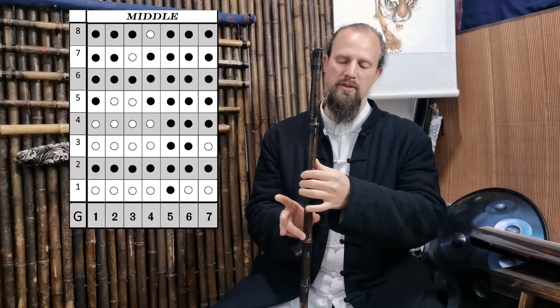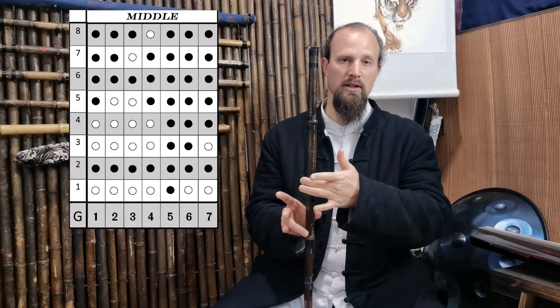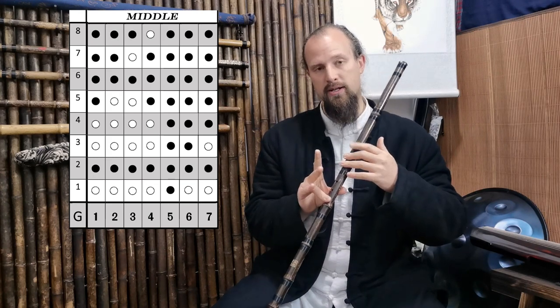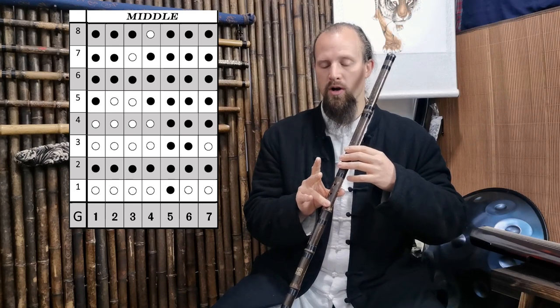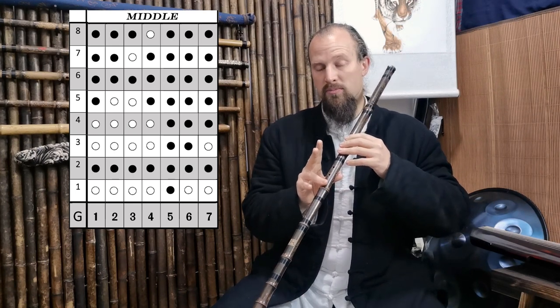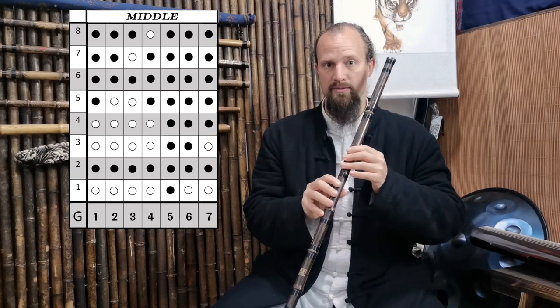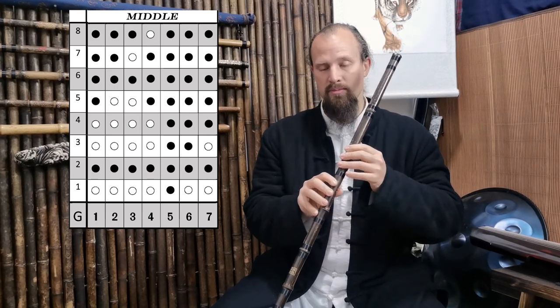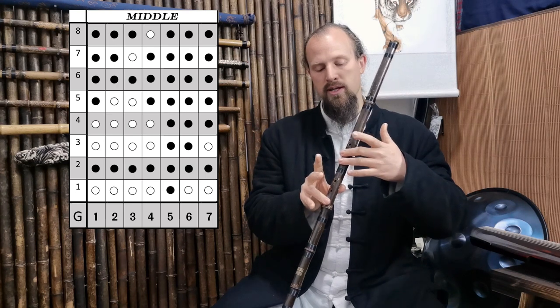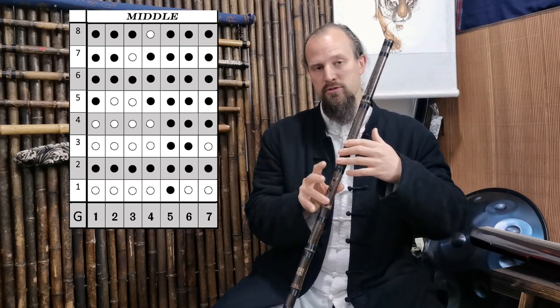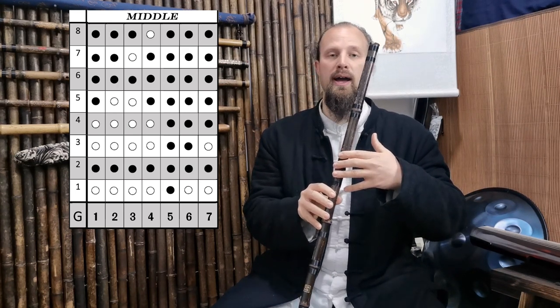That's just because with the thumb lifted by itself that's going to be a little bit sharp. So we're going to flatten it by covering these two to make it just a little bit lower. Also the next note is going to be everything covered again like the low register 5. Middle register 5, same thing. So that helps you if you have these three already covered it helps you just to drop this one hand and you have the next change.